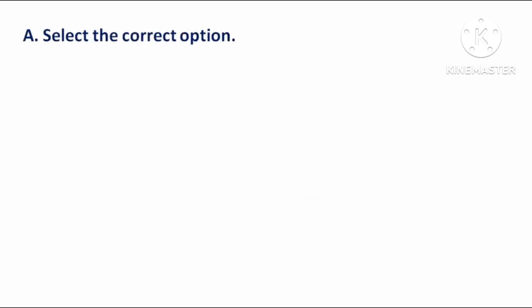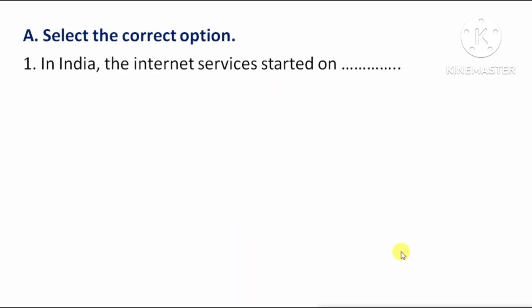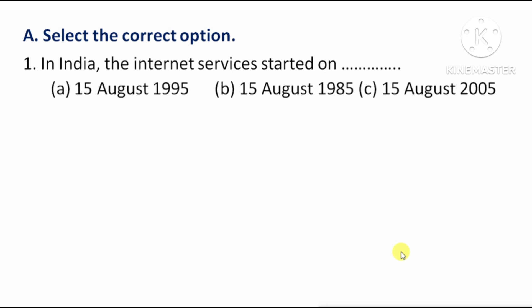Select the correct option. First question: In India, the Internet Services started on — means Bharat mein Internet Services start hui. Option A: 15th August 1995. Option B: 15th August 1985. Option C: 15th August 2005. The right answer is Option A, 15th August 1995.